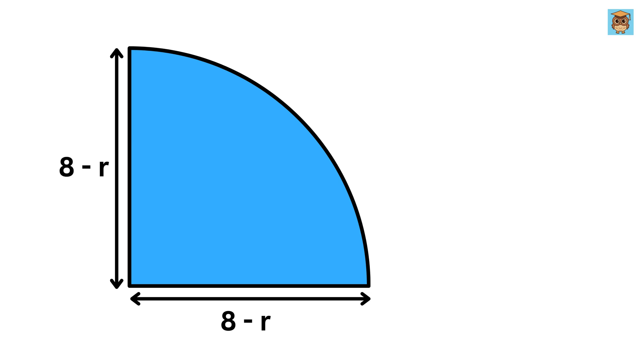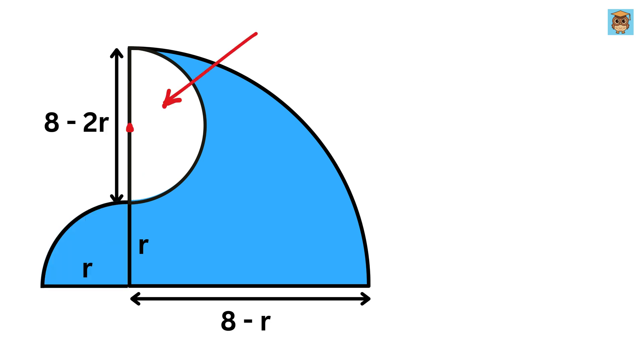This means this length is also equal to 8 minus r. Now, if this is r, then this will be of length 8 minus r minus r, or 8 minus 2r. This means the diameter of this semicircle is of length 8 minus 2r. Therefore, the radius of this semicircle will be this divided by 2, or 4 minus r.